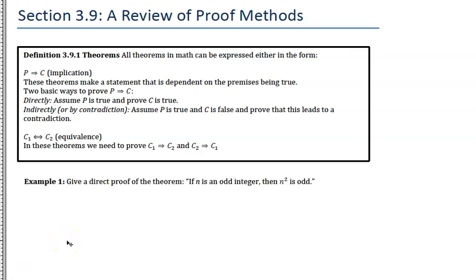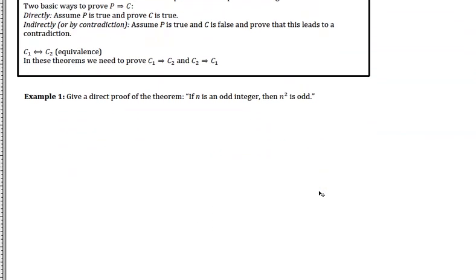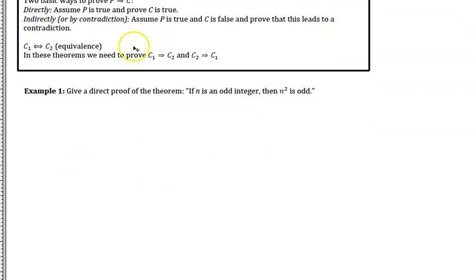Let's look at the first example. We're asked to give a direct proof of the theorem: if N is an odd integer, then N squared is odd. This is set up as an implication — 'N is an odd integer' is the premise, and 'N squared is odd' is the conclusion.